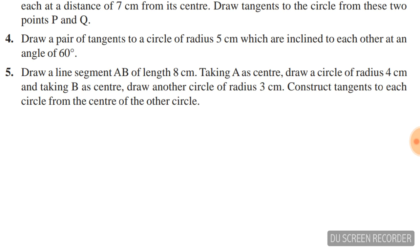Question number five: draw a line segment AB of length 8 cm. Taking A as center, draw a circle of radius 4 cm, and taking B as center, draw another circle of radius 3 cm. Construct tangents to each circle from the center of the other circle.